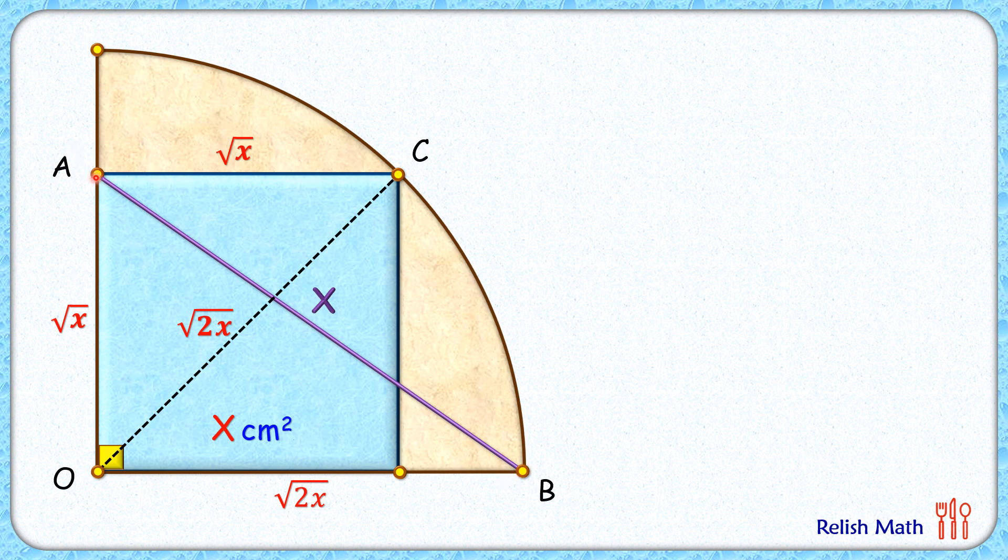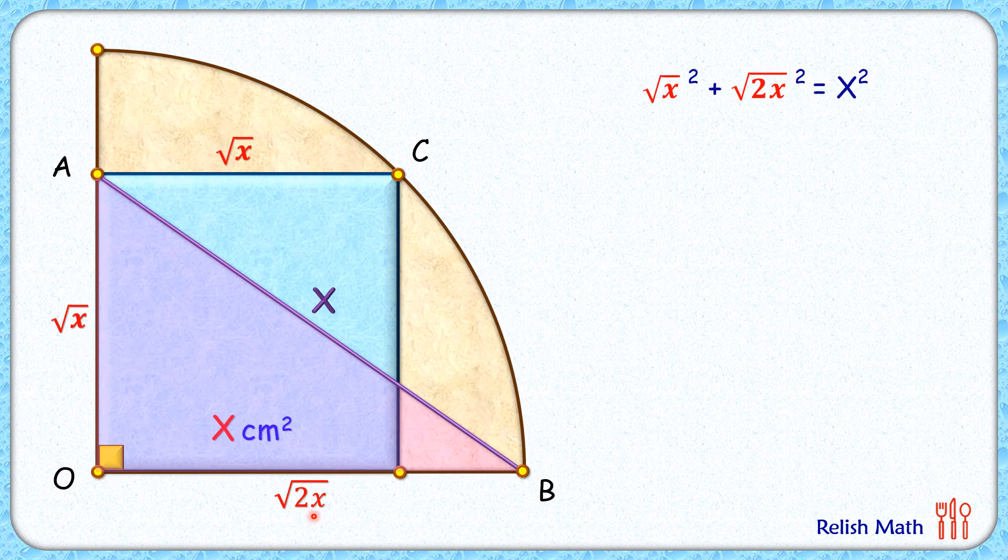Now if you look at the triangle AOB, it's a right angle triangle. Applying Pythagoras theorem we will get root x square plus root 2x square equals x square, which is the hypotenuse. Root x square is x, root 2x square is 2x.